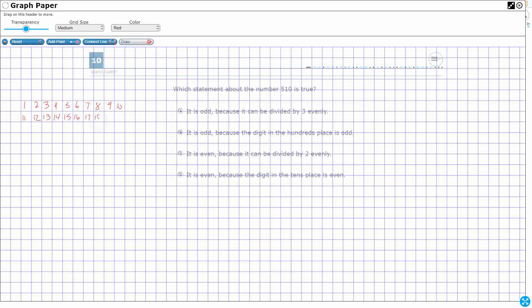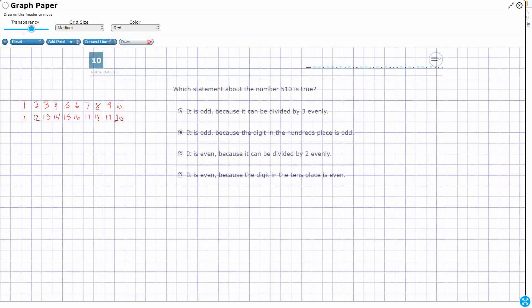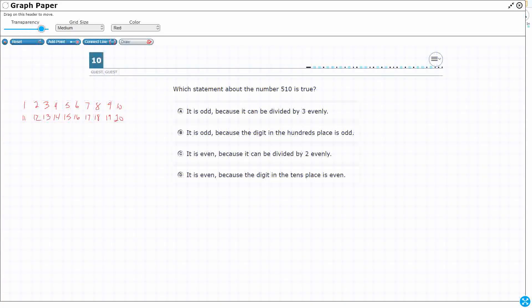If you ever get stuck on the STAR test, you can always do this. You can make it a little bit bigger if you need to. So odd numbers can only be put into uneven groups. 1 is an odd number because you can only put it into uneven groups.